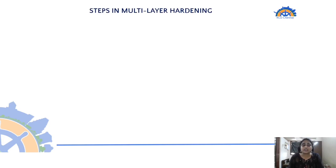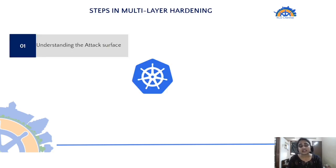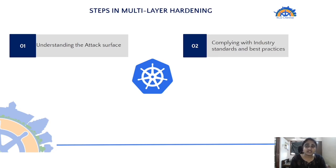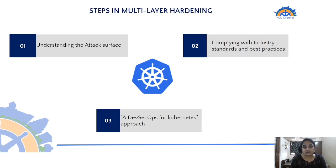So let's talk about how to implement multi-layer hardening — what steps you need to follow. The first step is understanding the attack surface at every layer: cloud, code, container, or cluster — understand the components present and how they interact. The second step is to comply each layer with industry standards and best practices; most of the hardening work is at this step. Over time, you evolve this into a DevSecOps for Kubernetes approach integrated into your SDLC.